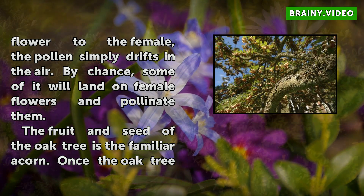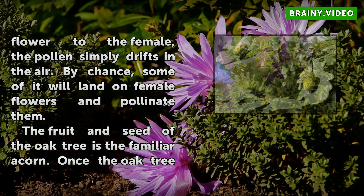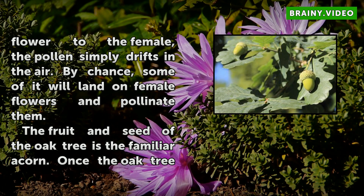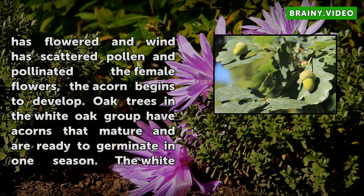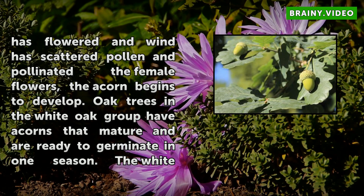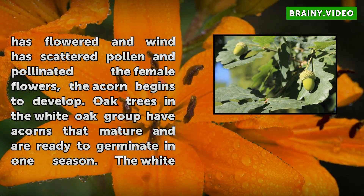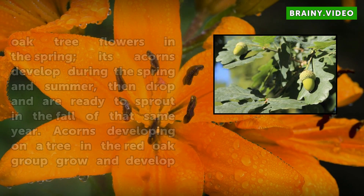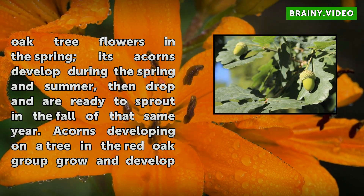The fruit and seed of the oak tree is the familiar acorn. Once the oak tree has flowered and wind has scattered pollen and pollinated the female flowers, the acorn begins to develop. Oak trees in the white oak group have acorns that mature and are ready to germinate in one season — flowering in spring, developing through summer, then dropping and ready to sprout in the fall of that same year. Acorns on red oak group trees develop similarly but are not mature and ready to sprout until after winter and into the following year.